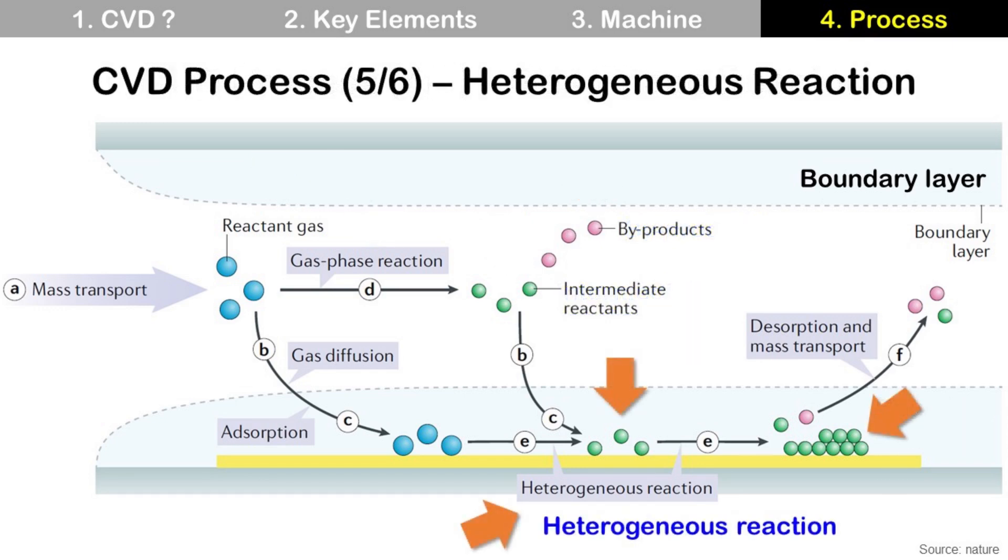Step E, heterogeneous reaction. Surface diffusion and heterogeneous reactions take place on the surface of substrate. Then form thin film.